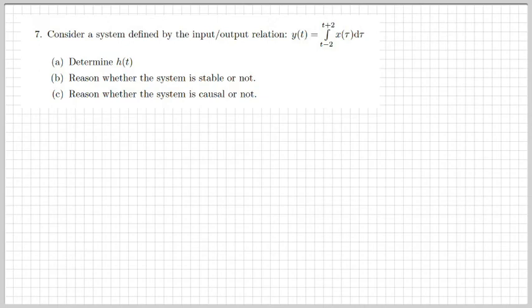The first exercise we'll solve today is displayed on this slide. We consider a system defined by a certain input-output relation, where y(t) is calculated from the input x(t) as the integral between t minus 2 and t plus 2 of x(τ) dτ, where τ is the integration variable. The exercise requires us to determine h(t), the impulse response of the system, and to reason whether the system is stable and whether it is causal.